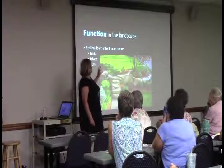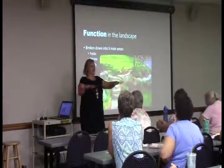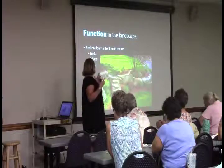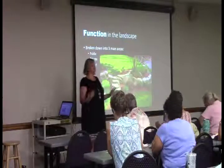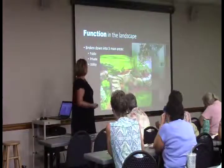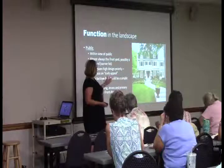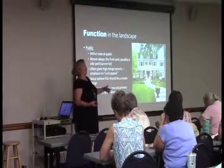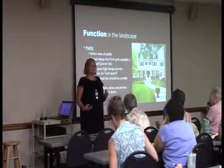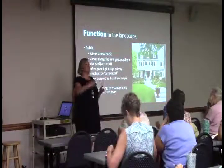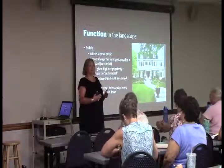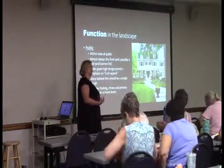If we break down a basic residential site, there are three main areas: your public space — typically the front — your private space, and your utility areas. With your public areas, that's what the public sees, typically the front yard. If you have a corner lot, that's different because a side yard would also be considered public space — that changes the design and where you're going to place things.